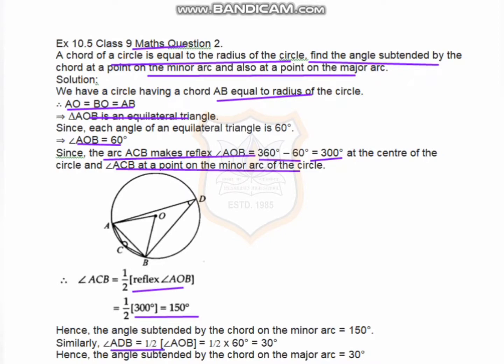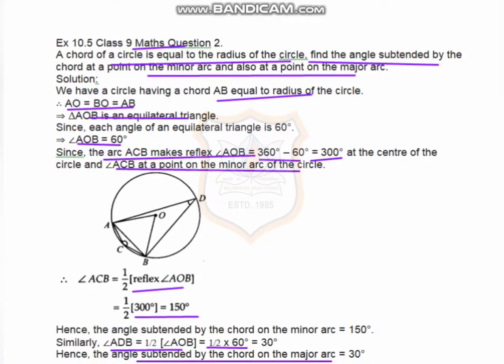Similarly, angle ADB equals half of AOB, which equals half of 60, equals 30 degrees. So the angle subtended by the chord on the major arc is 30 degrees. Thank you students.